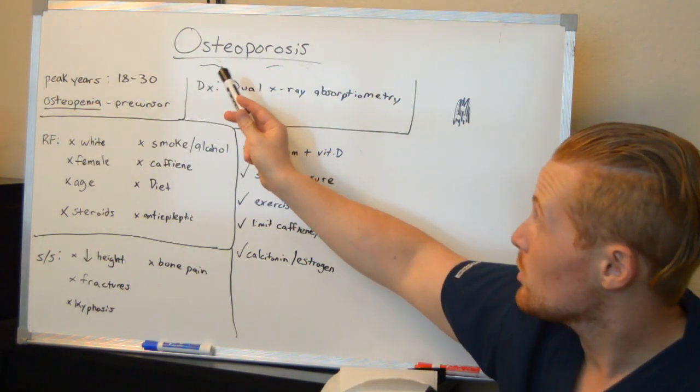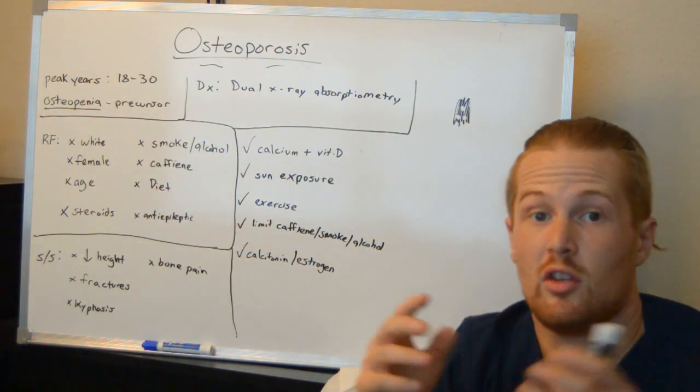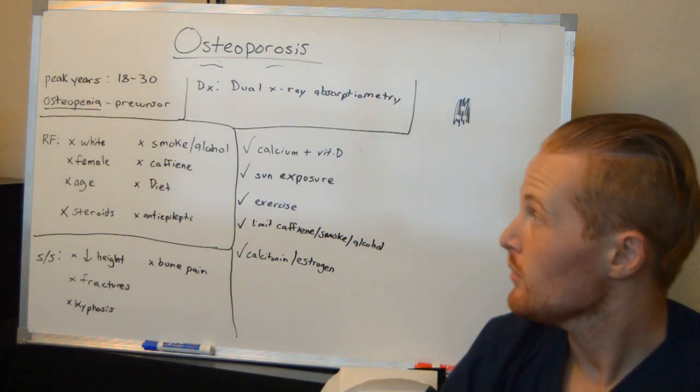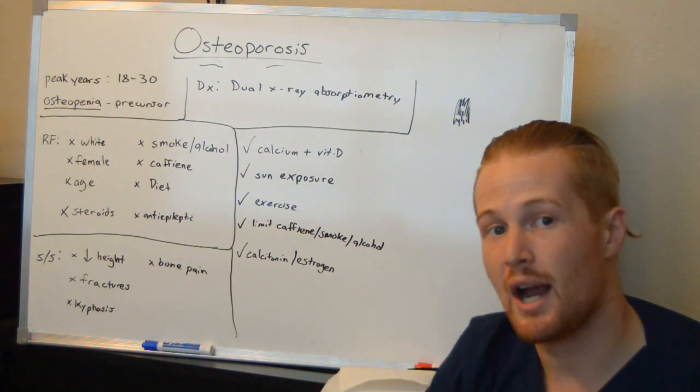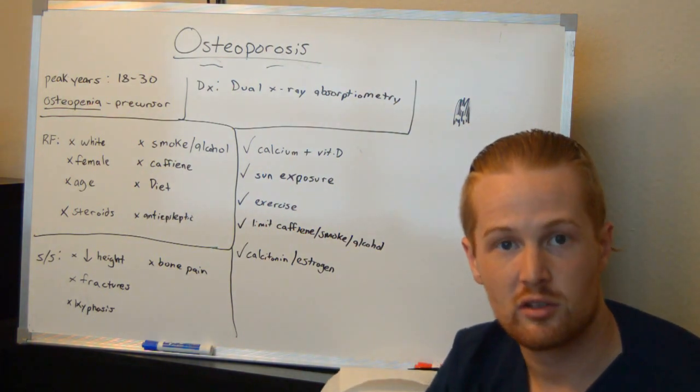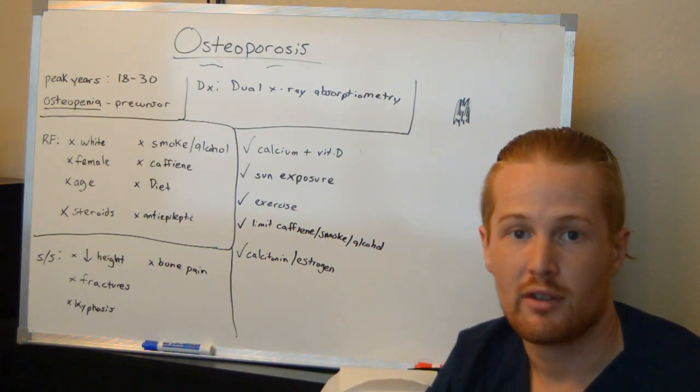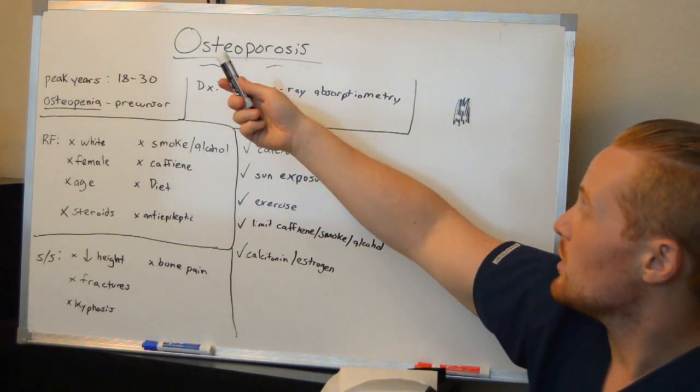So with osteoporosis, osteopenia is the precursor. Osteoporosis is the big bad boy diagnosis. Osteopenia just means for your height and weight and for your age and your sex that you don't have enough calcium. And then this is dangerously low.